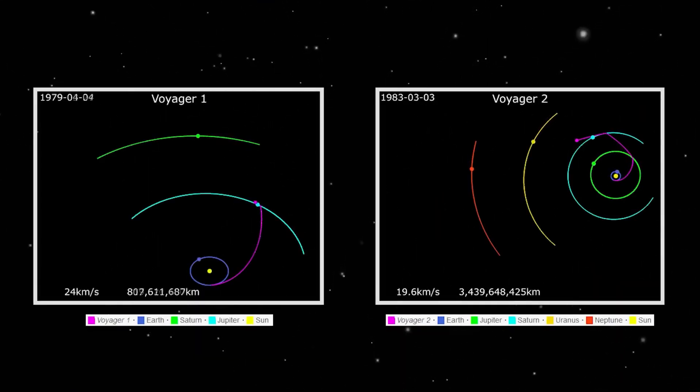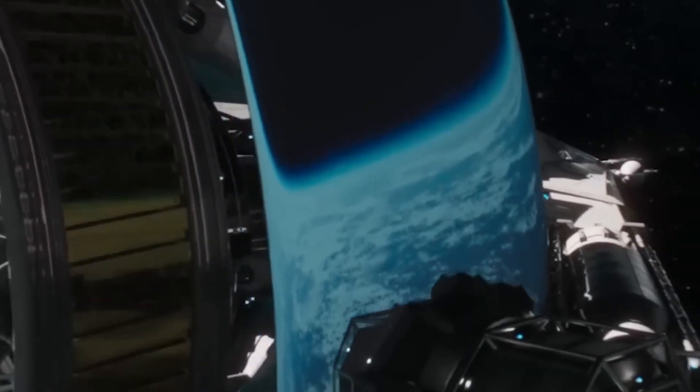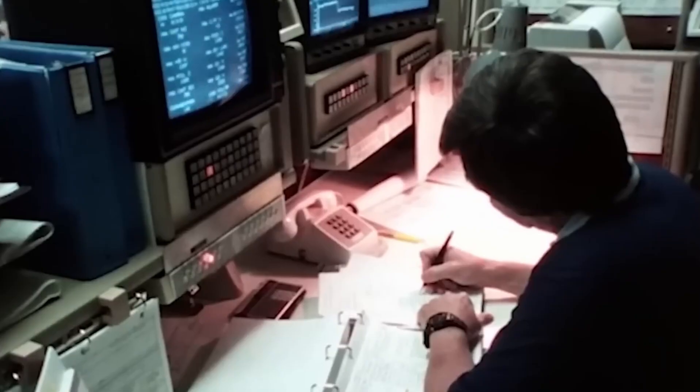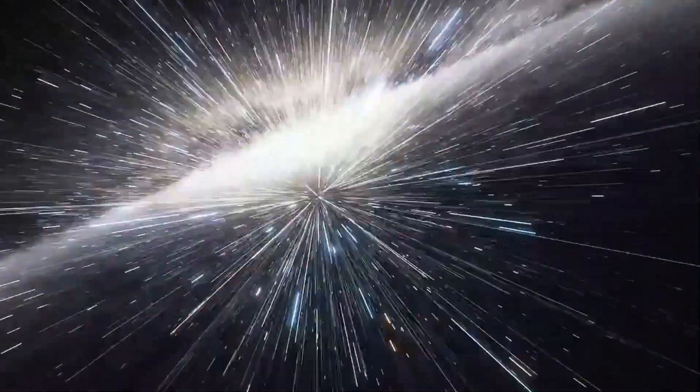Engineers thought perhaps it was interference, maybe a glitch due to cosmic rays or even system degradation. After all, Voyager 2 is nearly 50 years old. But when the same signal repeated and with increased strength, they knew something was wrong or perhaps very right. Because the data wasn't noise, it was a broadcast. Voyager 2 had seen something and it had recorded it.